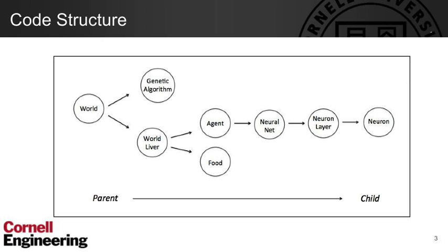Our world contains many world objects. They could be either agents or food. An agent is basically a neural network — each agent has its own neural network specific to it. Each neural network contains several neuron layers: the input layer, the output layer, and some hidden layers. And finally, neurons, which are basically perceptrons, are the fundamental building block of this entire neural network.